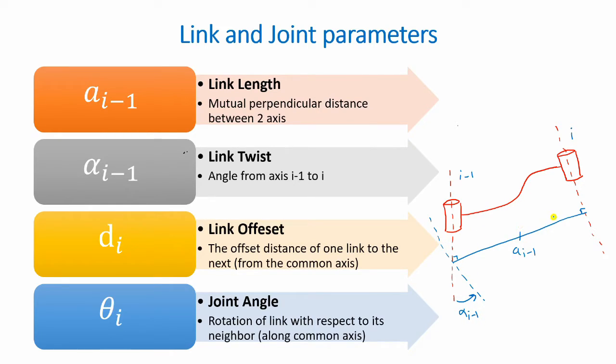The third value is the link offset, which is the offset distance between the link and the common axis. So sort of something like this. And theta i would be the rotation of the joint. So typically, d i values will only exist for prismatic joints, because they move linearly up or down, left or right. While theta i values will usually exist only for revolute joints as they revolve around a particular axis.